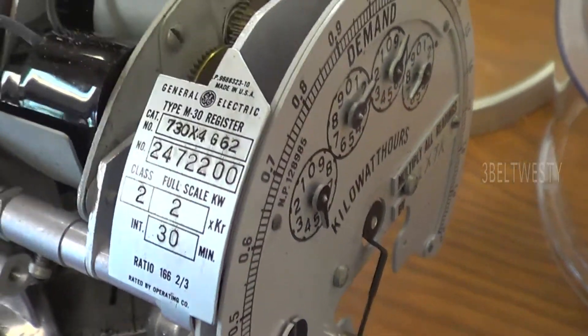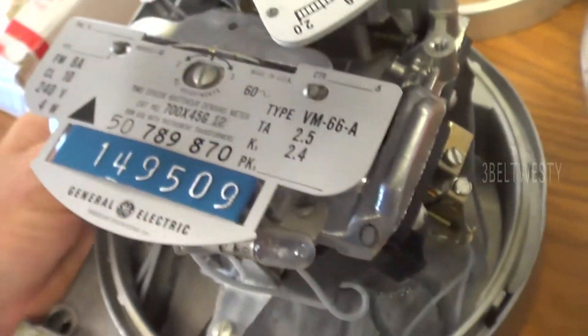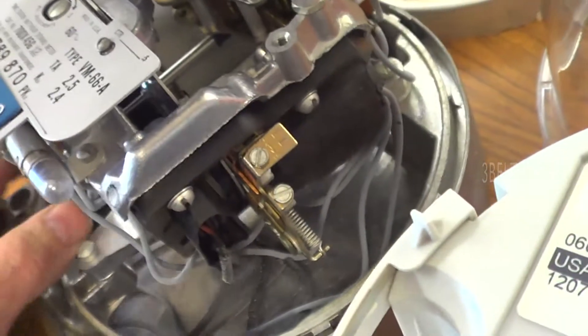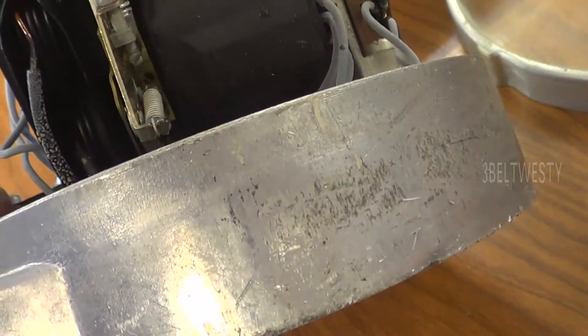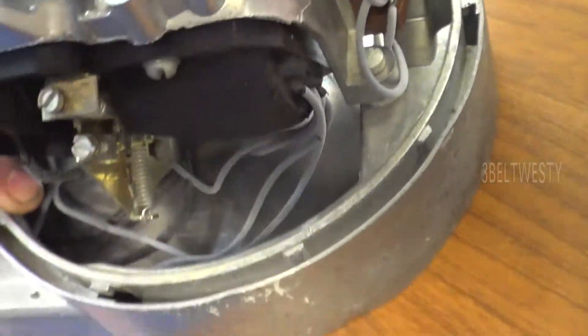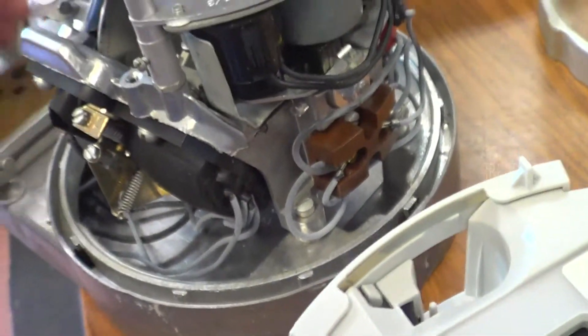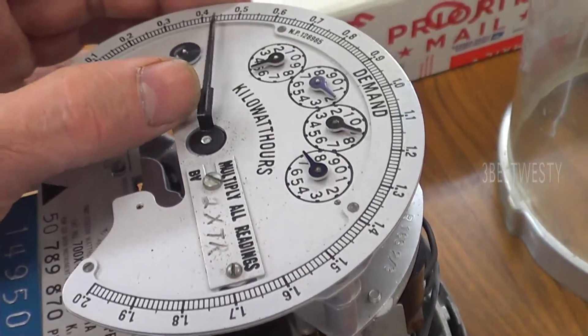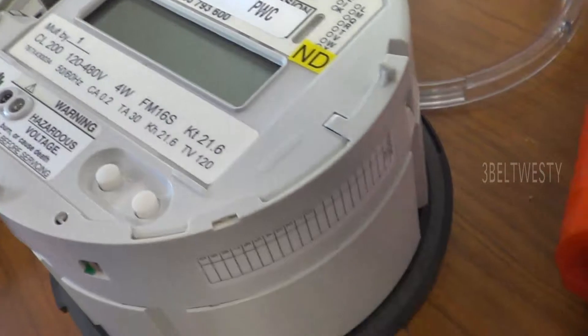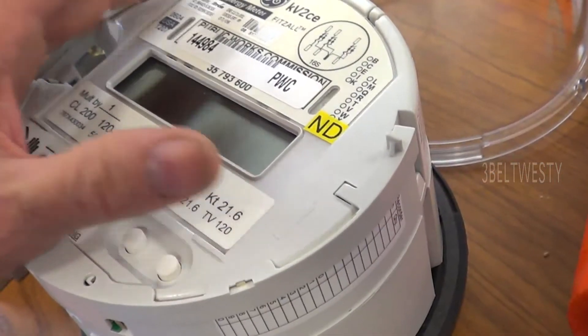And if you take an old-time one like this, that's the register M30, but the demand feature actually has a heating element in there and they usually had them for 30 minutes or 15 minutes depending on what type of service you had or what type of plan you had. And so it would physically heat up something to rotate this around.